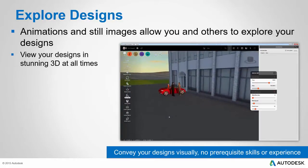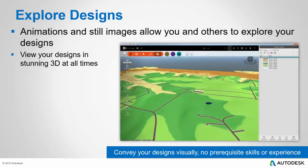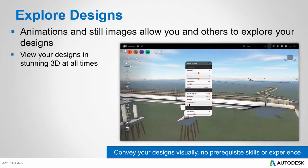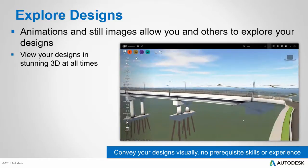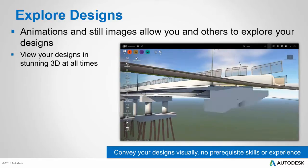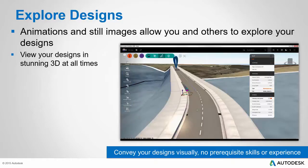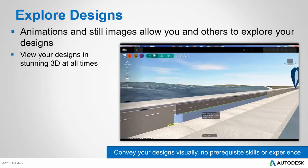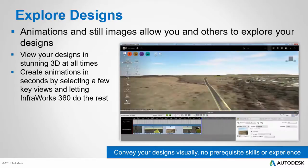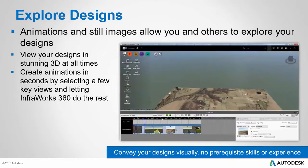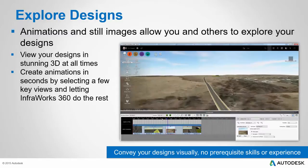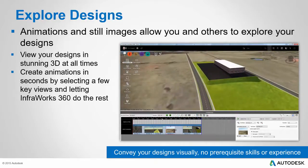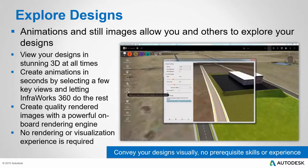InfraWorks 360 is also a great place to explore your designs through animations and still images. You can view your designs in stunning 3D at all times because 3D is the working environment of InfraWorks 360 — it's all 3D all the time. There are even additional tools where you can make the ground surface transparent so that you can see underground infrastructure as part of your design. The realism and detail of the interface makes it so much easier to understand the performance of your design, whether it's a culvert, a storm pipe, a bridge, or an intersection. Creating animations is easy because in a few seconds you can select a few key views and let InfraWorks 360 do the work of stitching those views together into a smooth flowing animation. You can even create very high quality still images using the powerful onboard rendering engine of InfraWorks 360.